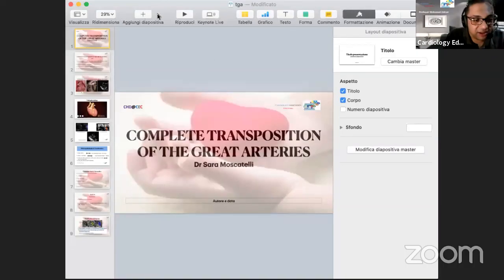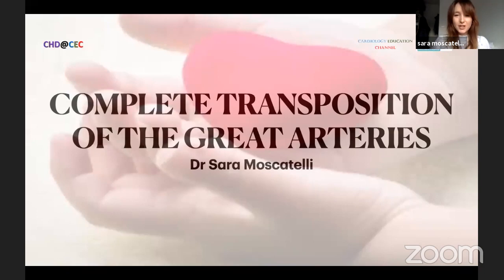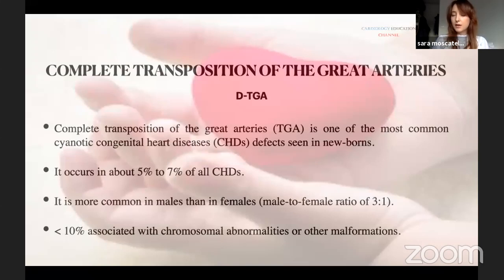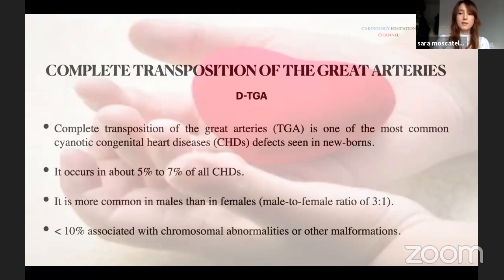Today I will give a talk about complete transposition of the great arteries. It is one of the most common congenital heart diseases, representing five to six percent of all congenital heart disease. It is defined as a cyanotic congenital heart disease, more common in males than females with a ratio of three to one, and in less than ten percent of cases it is associated with chromosomal abnormalities or malformations of other organs.